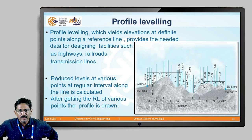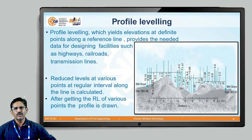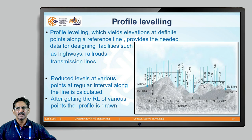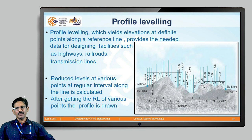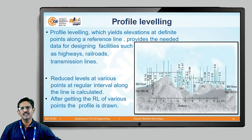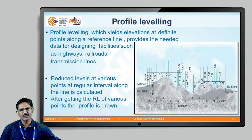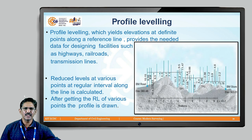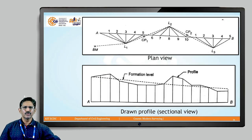Profile leveling is used when you want to know the profile of the ground — where the ground is up, down, up, down along a route. It is a differential leveling done basically along the center lines of roads and railways to facilitate route surveys. Reduced levels at various points at regular intervals are taken along the line, and after getting the reduced levels the profile can be drawn. The result is a sectional elevation at the bottom and the plan at the top, showing the surveyed route.